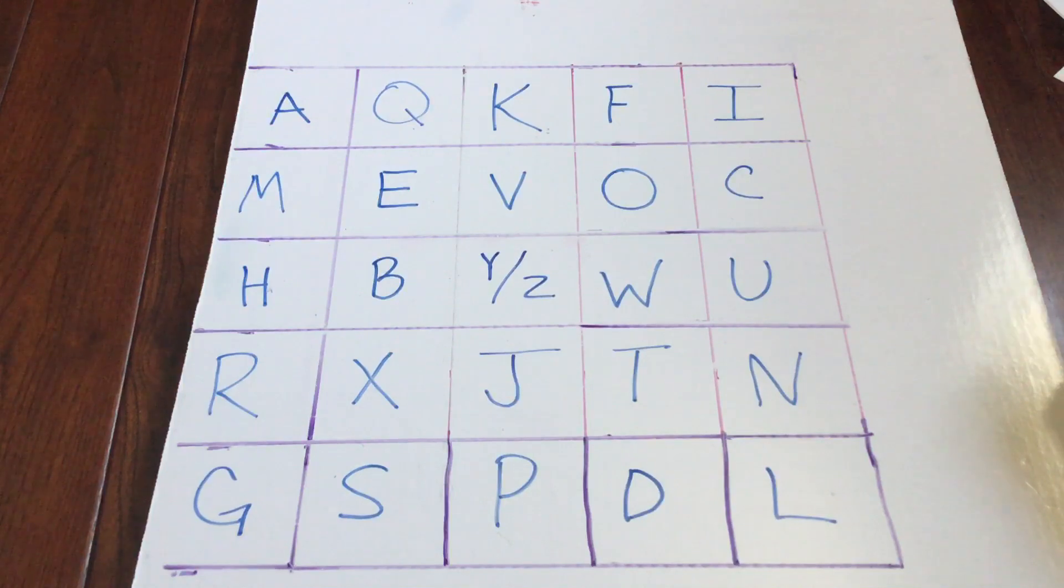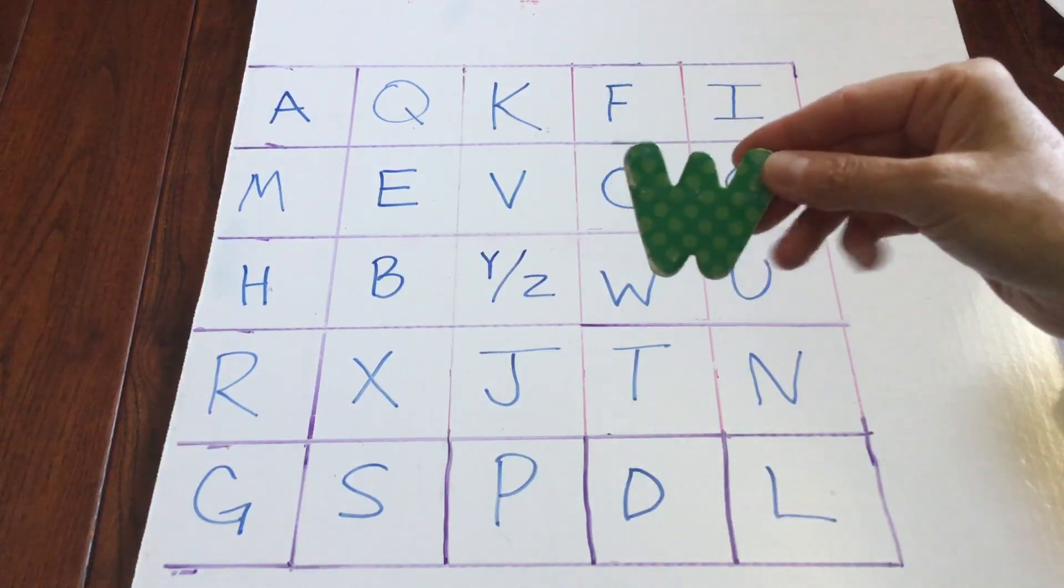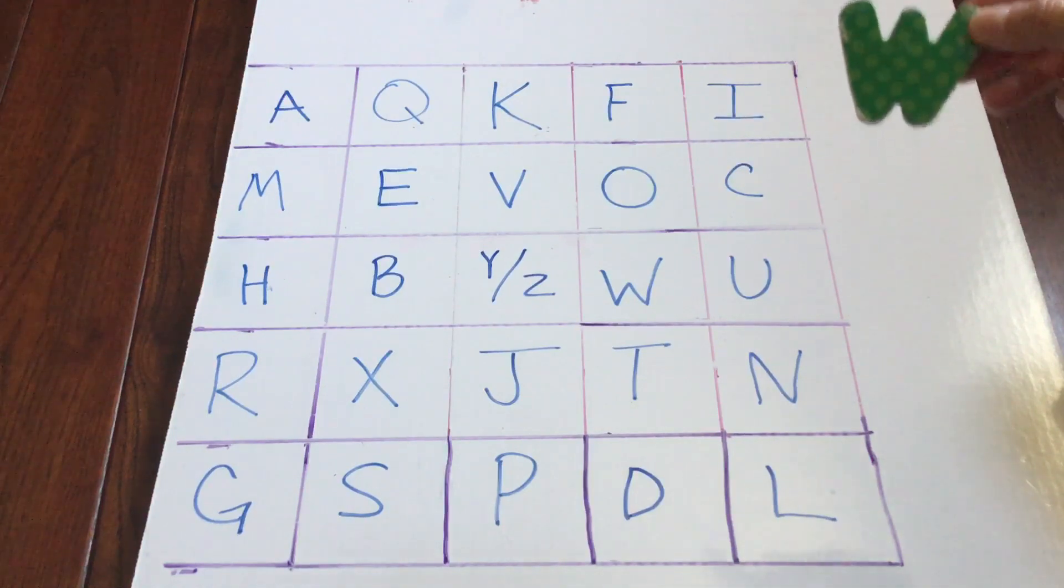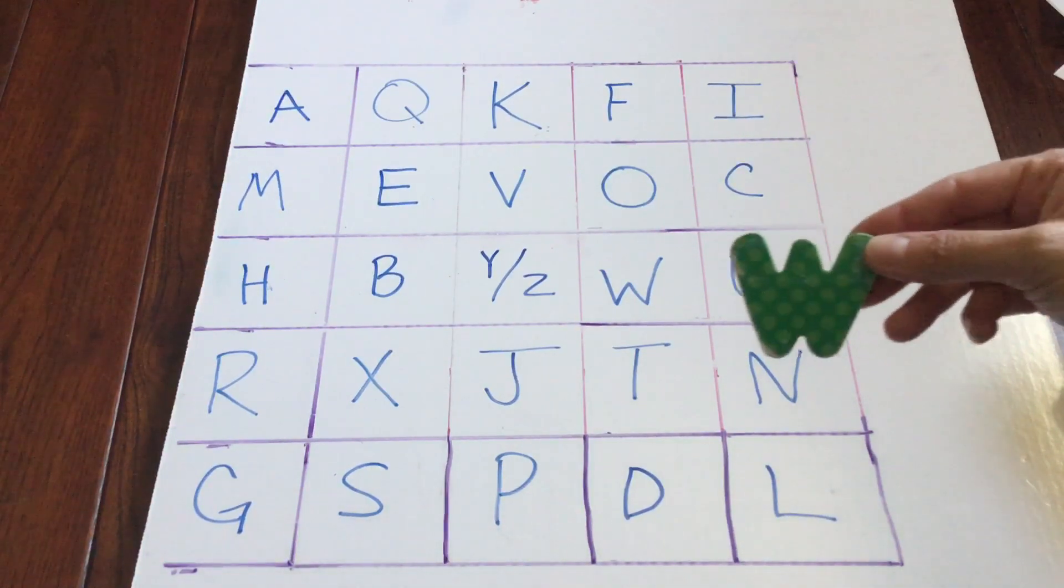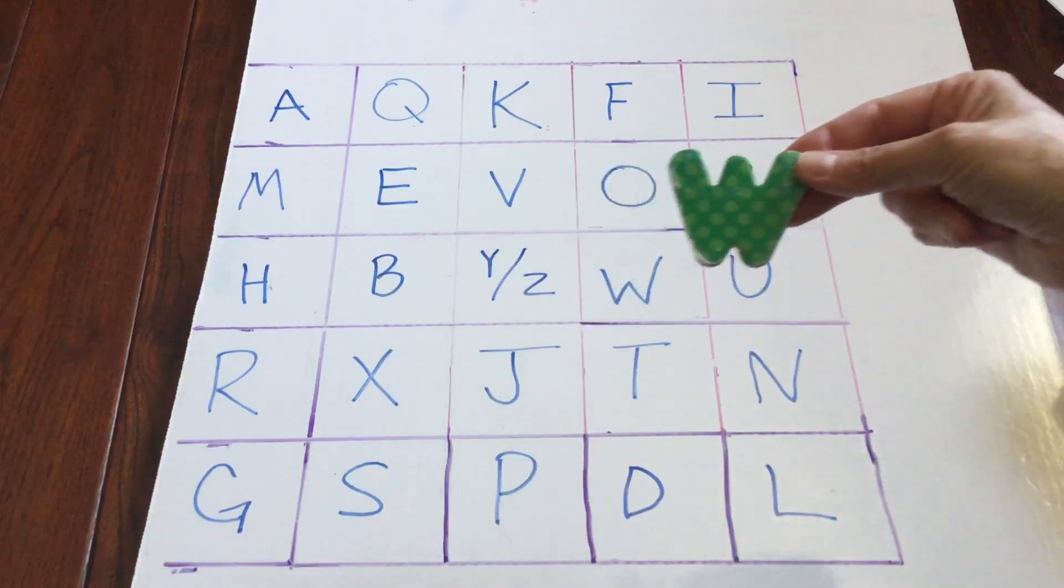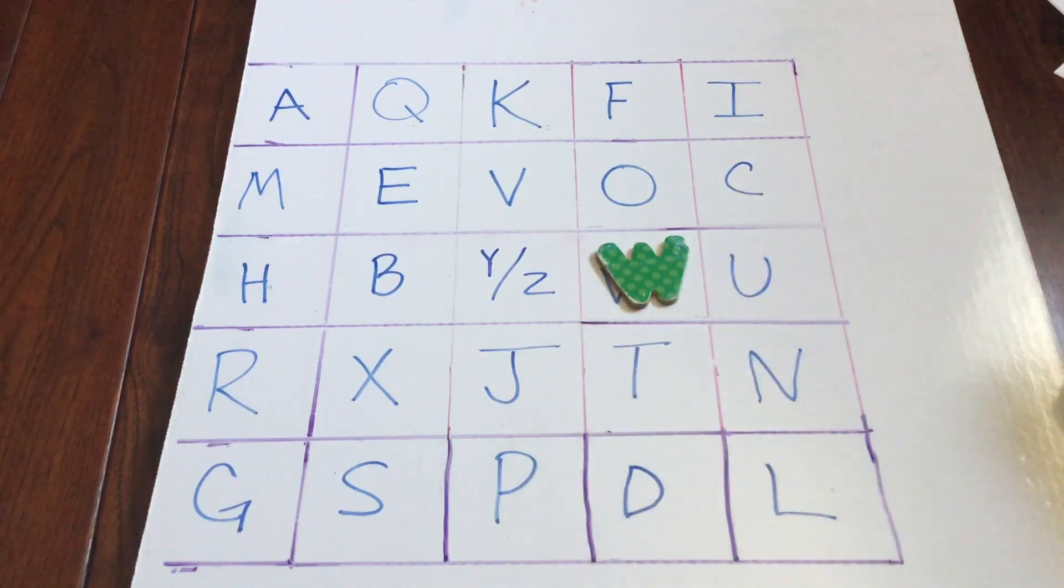So I'm going to pull the first letter and maybe you can help me find where they go. The first letter is W. Where on the board would I find W? Do my friends see? Right. There it is. Right there.